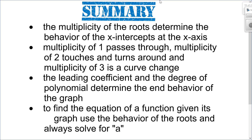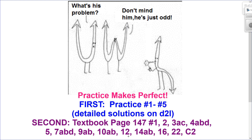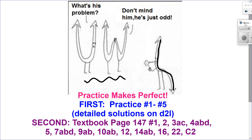To summarize this lesson: multiplicity of the roots determines the behavior at the x-axis — multiplicity 1 means passing through, multiplicity 2 is a touch and turn around, and multiplicity 3 is a curve change. The leading coefficient and the degree determine the end behavior of the graph. To find the equation of a function, use the factors and multiplicities from the graph, and always solve for a using a point that is not an x-intercept. Now go do your practice questions, numbers one to five. Detailed solutions are on D2L, and then move on to your textbook questions after that.